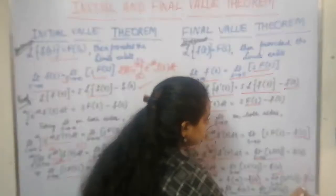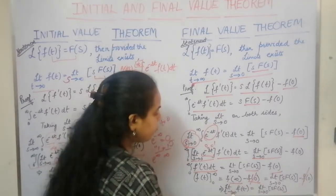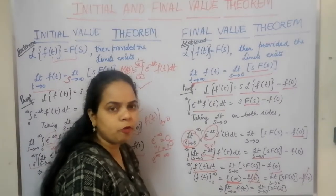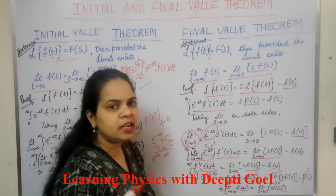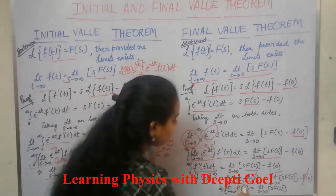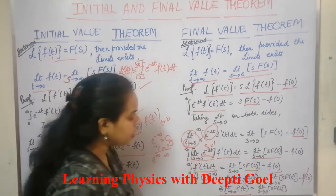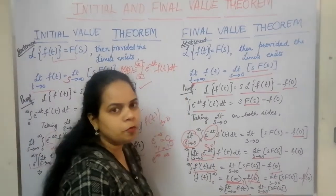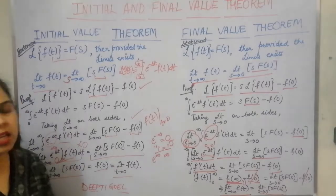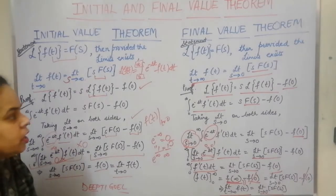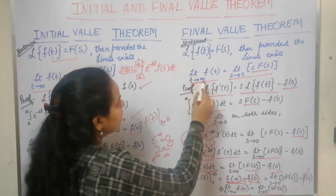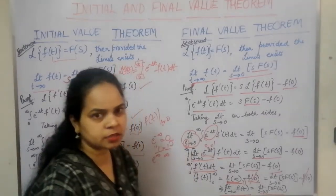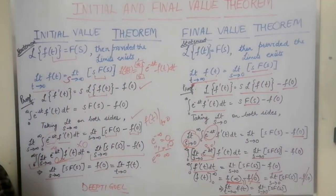Now f(0) on both sides cancels out. We are left with f(∞) = limit s→0 of s·F(s). Since f(∞) means the function f(t) at t tending to infinity, we can write: limit t→∞ of f(t) = limit s→0 of s·F(s). This is the proof of the final value theorem.